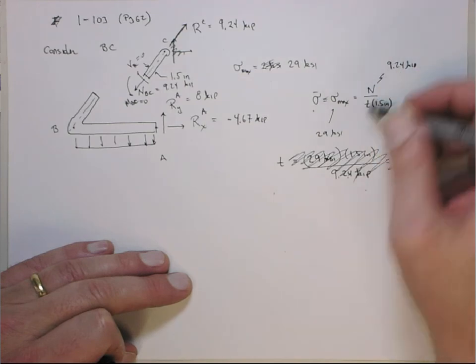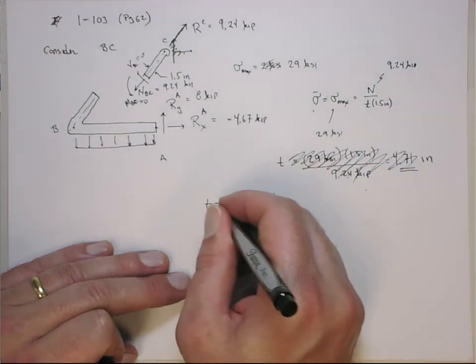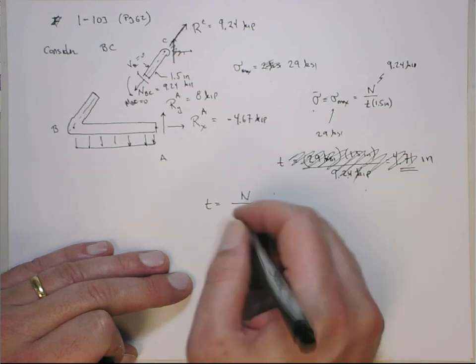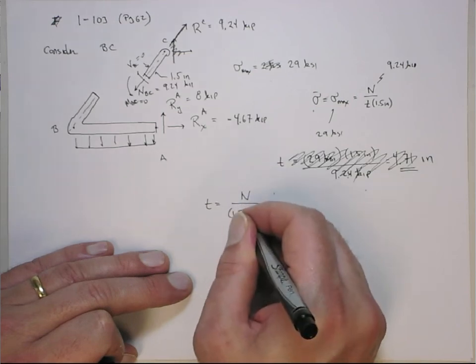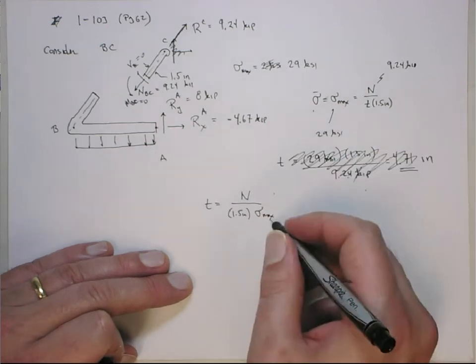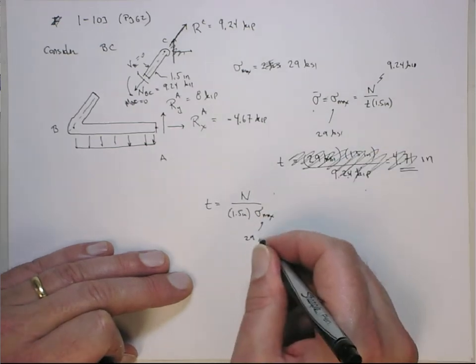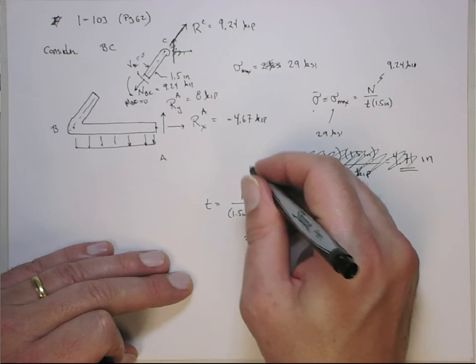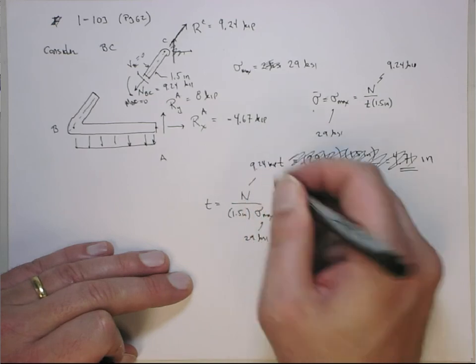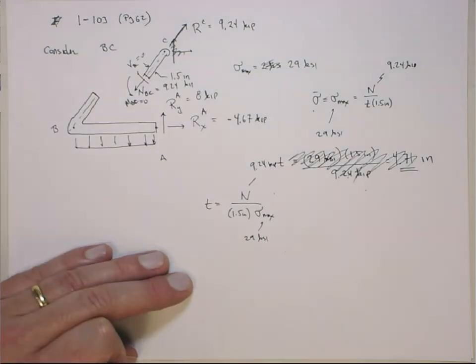These two had to be switched. It's T equals, let me do it more slowly. So, I apologize for that. T equals N over the 1.5 inches over the sigma max. I put the sigma max on top. This is the 29 KSI. This is the 9.24 kip. And I was even sloppy. I didn't even catch myself in the inches.